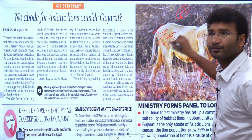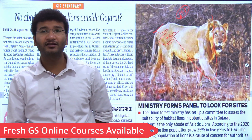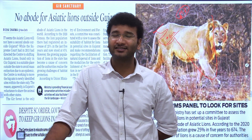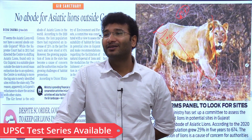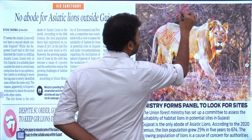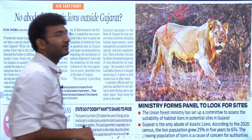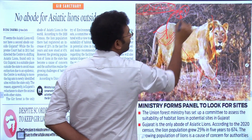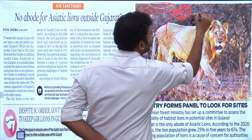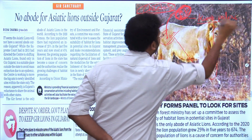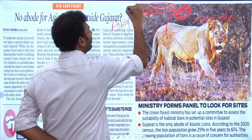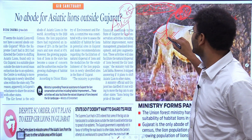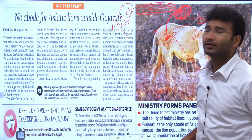Gir National Park is considered the pride of Gujarat and the state does not want to share it. When the Supreme Court asked to ship the lions to another place, the Cheetah project came into picture. Cheetahs were also chosen for the same location — Kuno Palpur Wildlife Sanctuary. But why do these animals need to be shifted from one location to another?